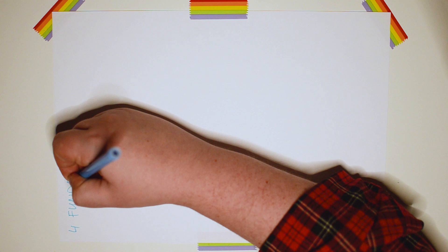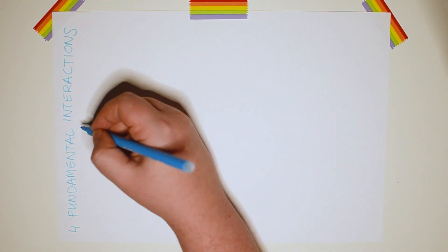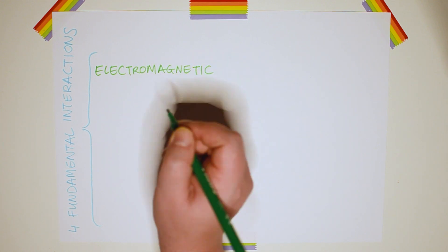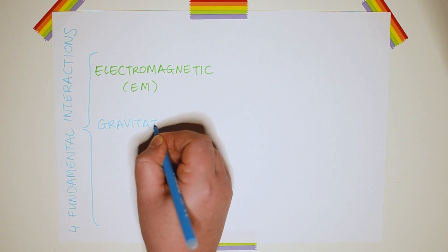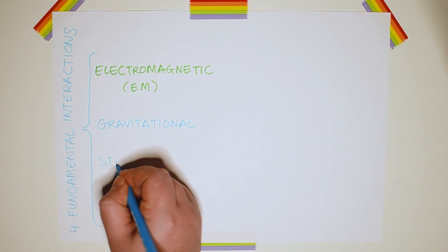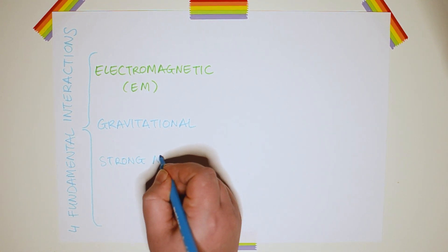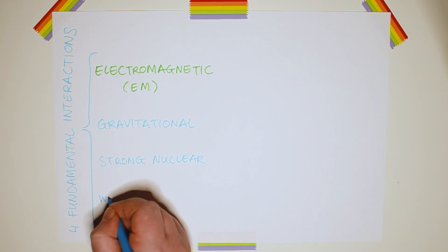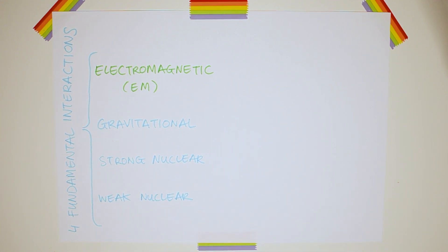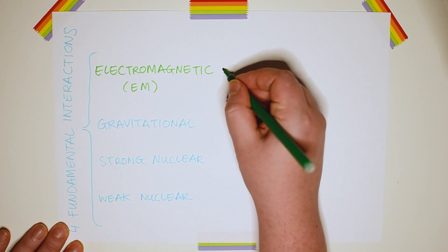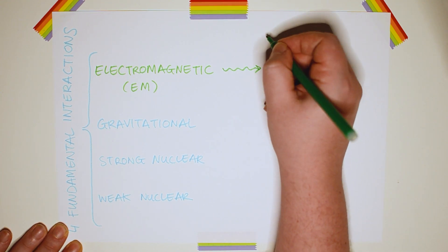Electromagnetic fields, electromagnetic waves, electromagnetic radiation, and the electromagnetic spectrum. Electromagnetic interaction is one of the four fundamental interactions that shape the entire universe. The other three are: A, gravitational interaction, which is what stops you from spontaneously lifting up the Earth and floating away into space; B, strong nuclear interaction, which is what holds the nucleus of an atom together; and C, weak nuclear interaction, which is what can make the nucleus of an atom fall apart.